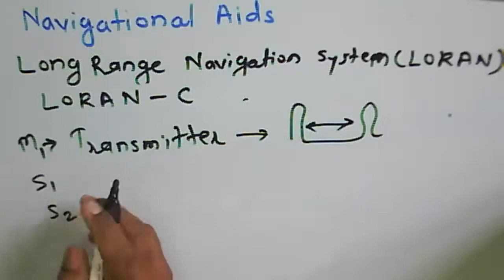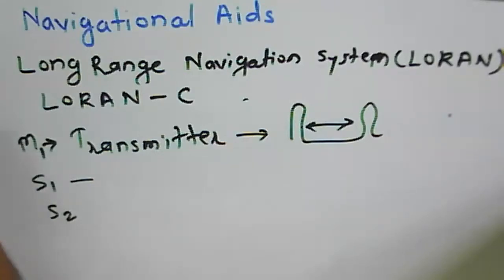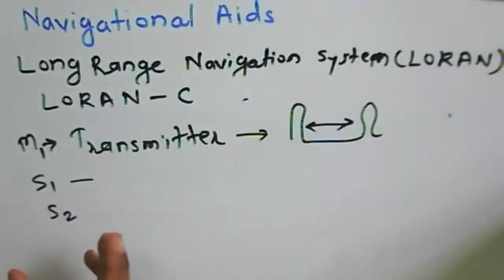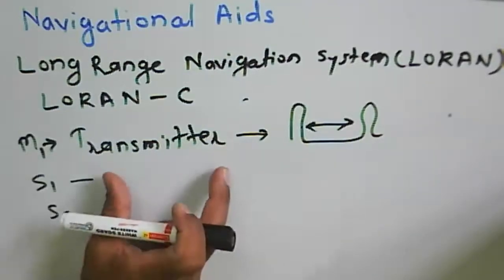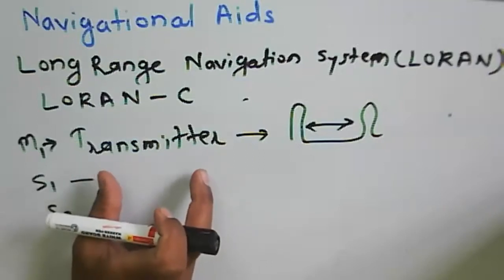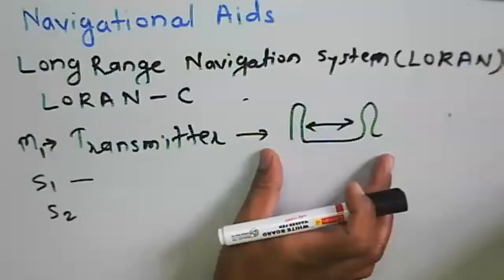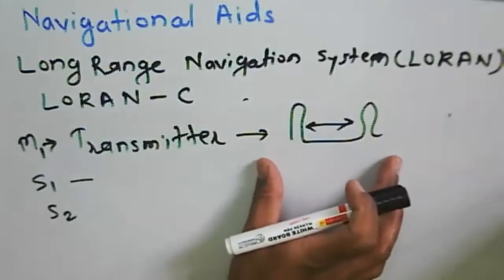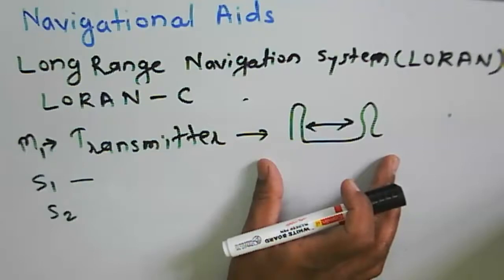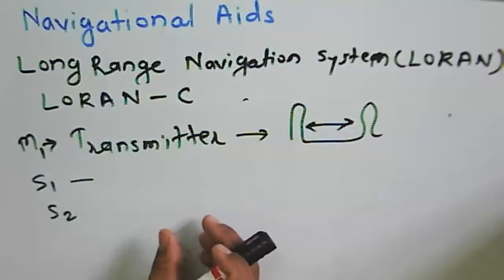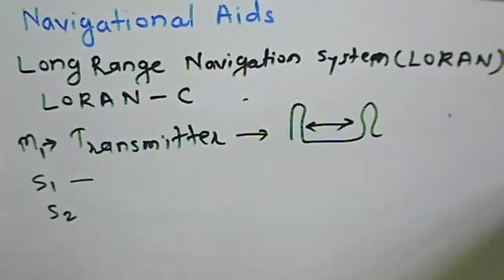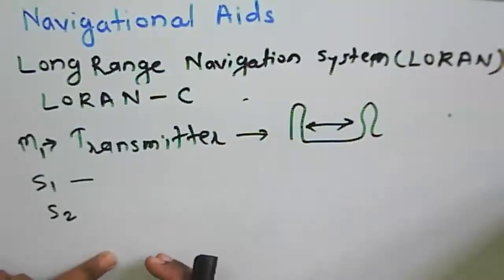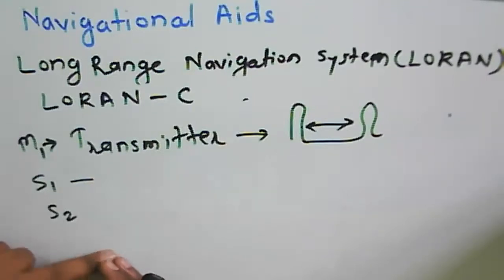The control station monitors the characteristics of signals transmitted by the LORAN transmitter. If any variation in the signal is detected, that information is sent back to the transmitter. In a chain of transmitters and receivers, any station can act as master for a given particular chain, and another is designated as secondary.